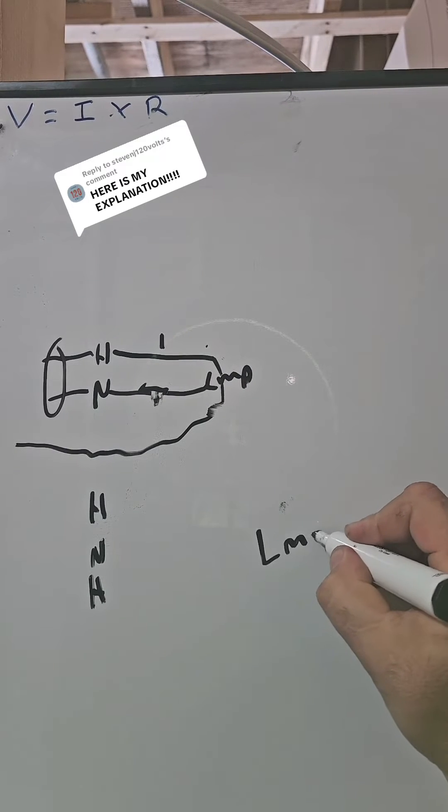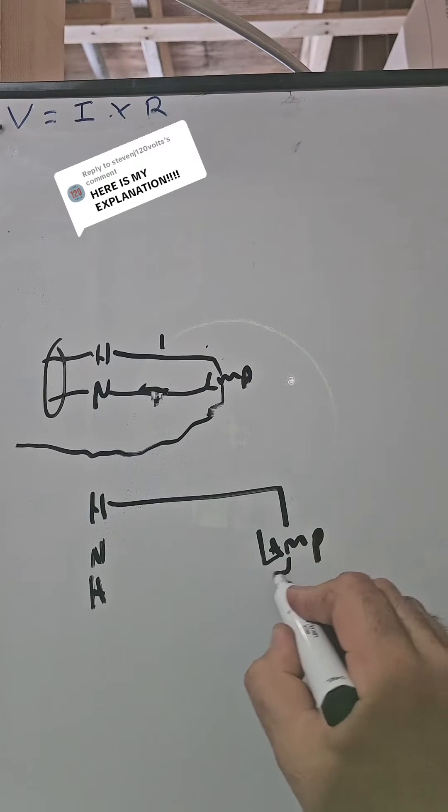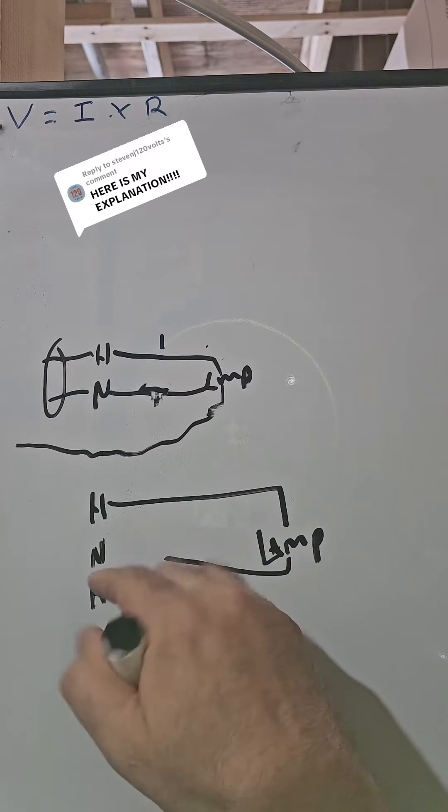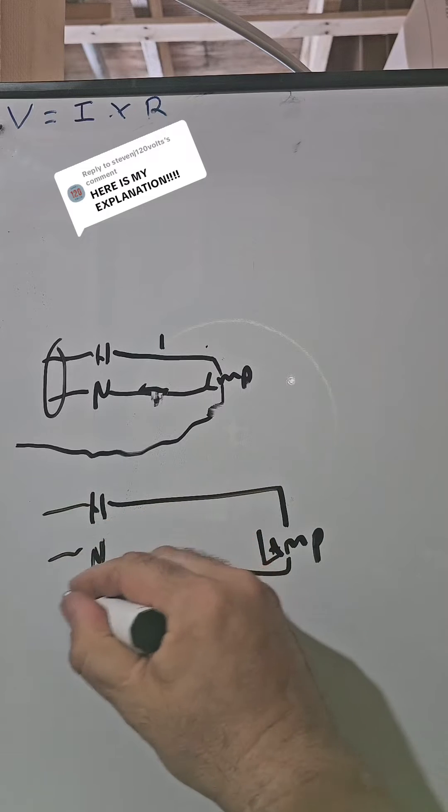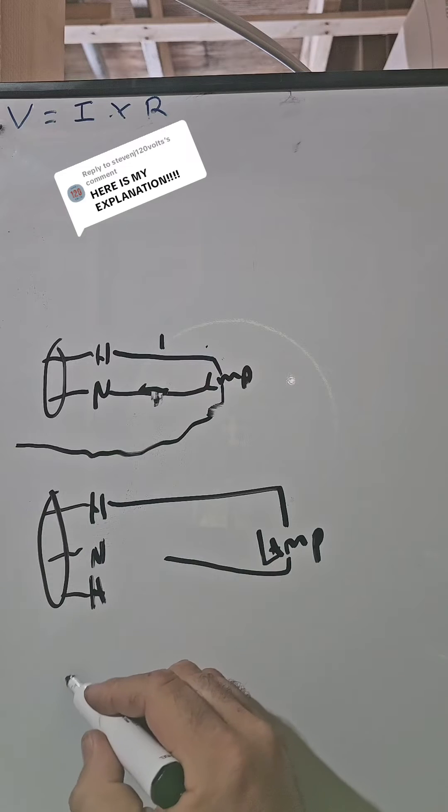He has a lamp. Oh, we've got the A. He ran his hot to the lamp. And the white that came back to the lamp should have gone here so that internally in the breaker, this could be monitored. But instead, what he did was he has a neutral bar over here in his panel.